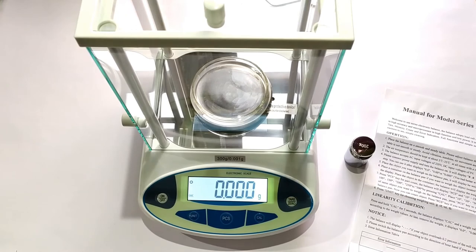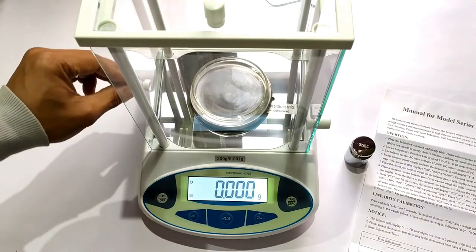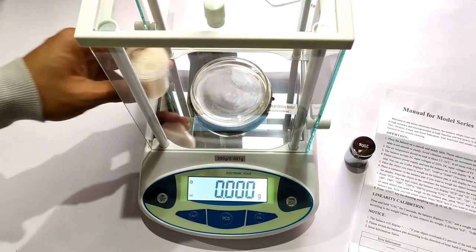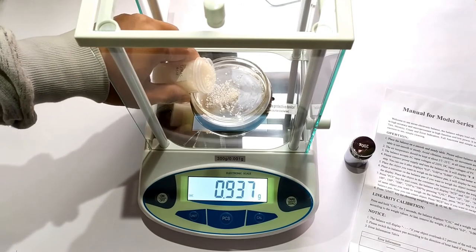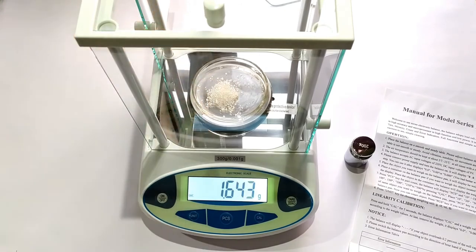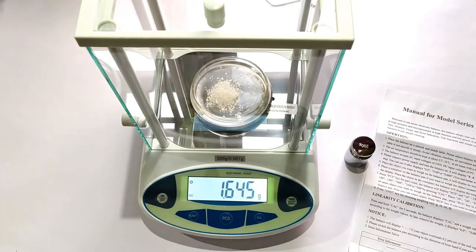Once the balance has been tared, we add the substance to be weighed. We now carefully close the weighing chamber and leave it for several seconds to allow the chamber to stabilize. And let's find out how much the values fluctuate.